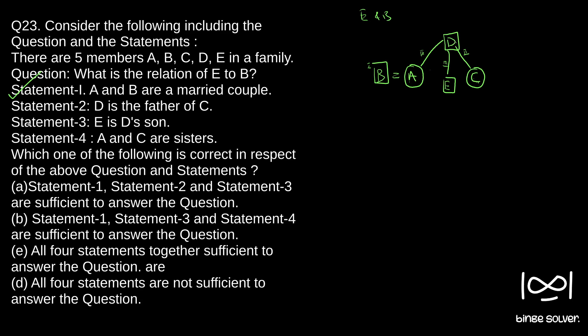Since E's relationship comes like this, A and C has to be connected to D. So statement E is D's son is also used. D is the father of C is also used, and A and C are sisters are also used. Only by using all these statements we will be able to link B and E. So since A and C has to be connected, E and D has to be connected, so that B and E will be linked. So all the four statements are used here to make the connection between E and B. So all four statements together sufficient to answer the question is the answer here. So solution to question 23 is E, all four statements are needed to answer the question.